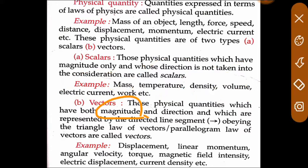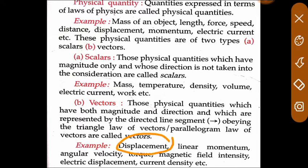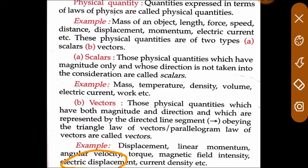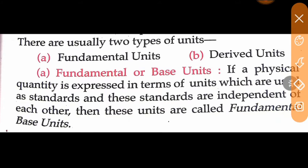Vector quantities are those physical quantities which have both magnitude and direction. Examples include displacement, velocity, linear momentum, angular velocity, torque, magnetic field intensity, electric displacement, and current density. All these are vector quantities because they have both magnitude and direction.